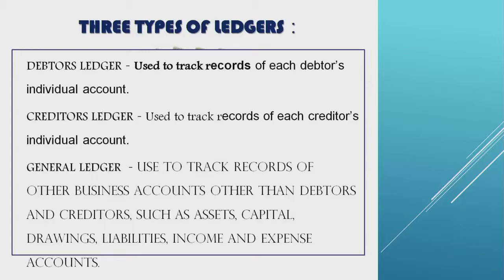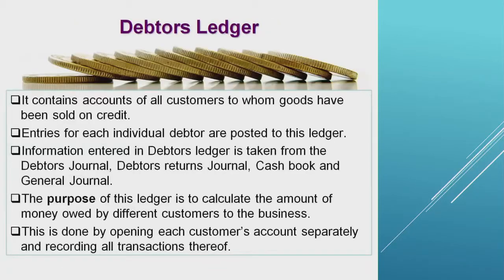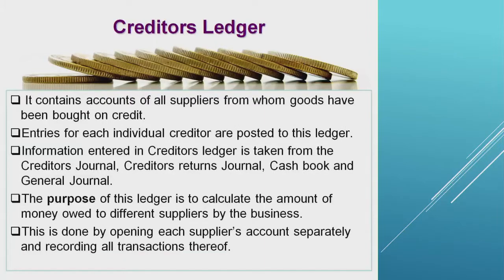After recording in the books of first entry, we post information to the ledgers. The debtors ledger is used to track records of all debtors' individual accounts. The creditors ledger is used to track records of all creditors' individual accounts. The general ledger is used to track records of all other business accounts other than debtors and creditors, such as assets, capital, and drawings. The debtors ledger contains accounts of all customers to whom goods have been sold on credit. The creditors ledger contains accounts of all suppliers from whom goods have been bought on credit.